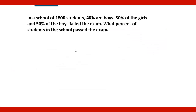Here is the first question: In a school of 1800 students, 40 percent are boys — which means 60 percent are girls. Out of these, 30 percent of the girls failed in the exam and 50 percent of the boys failed in the exam. We have to find what percent of the students passed.